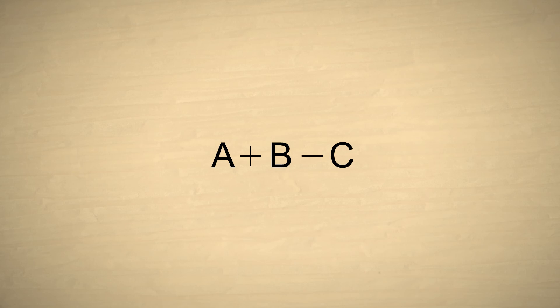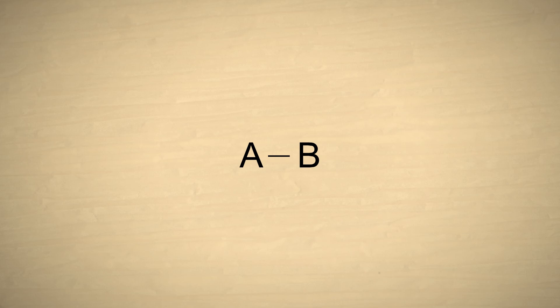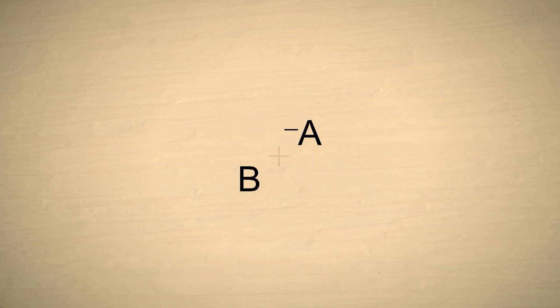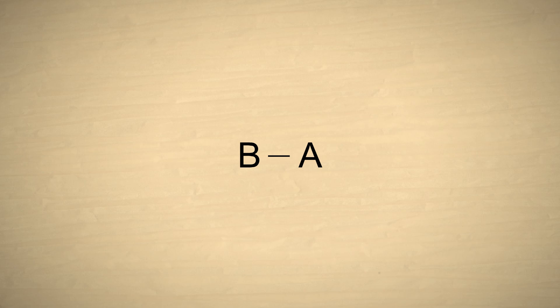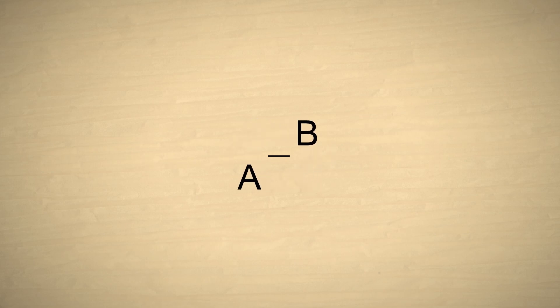Here's one more trick using the distributive property. Let's say we start with A minus B. If we enclose this in parentheses with a negative sign in front, it switches the sign of each number. Using the commutative property, we can then swap the positions of the two numbers, and the result is that we now have B minus A. So, placing a negative sign in front of two numbers which are subtracted swaps the two numbers.